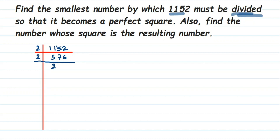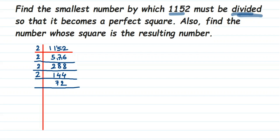We continue dividing by 2: 576 ÷ 2 = 288, 288 ÷ 2 = 144, 144 ÷ 2 = 72, 72 ÷ 2 = 36, 36 ÷ 2 = 18. Each time the number is even so we keep dividing by 2.